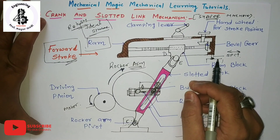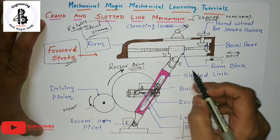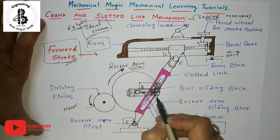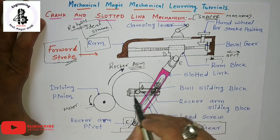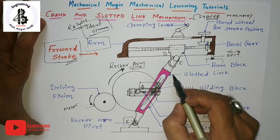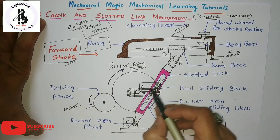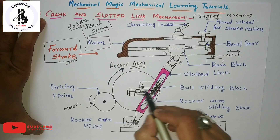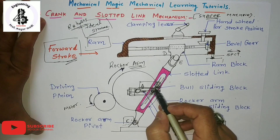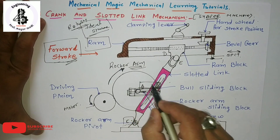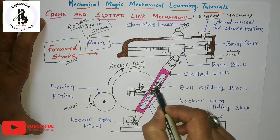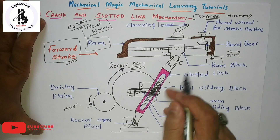We can also adjust the length of the stroke. The stroke length is the distance between the two extreme positions. From the figure, it is clear that the stroke length depends on the length of the A to B crank. The length A to B can be increased or decreased by moving the crank pin at B along the bull gear, which results in adjustment of the stroke length of the ram.